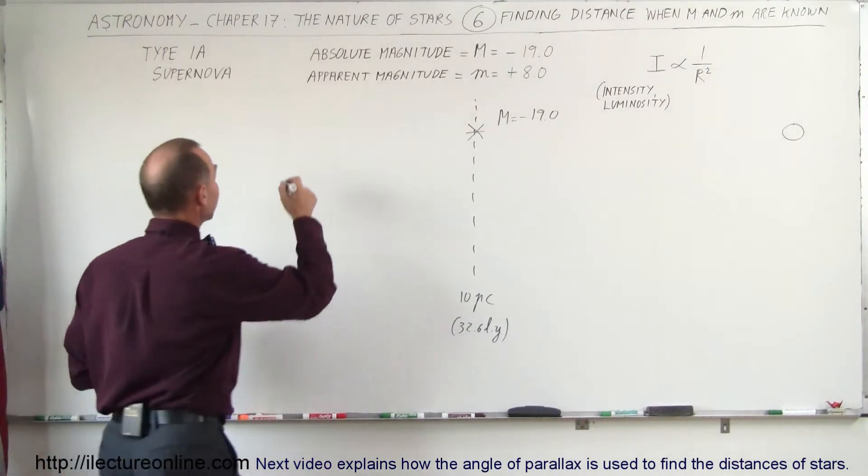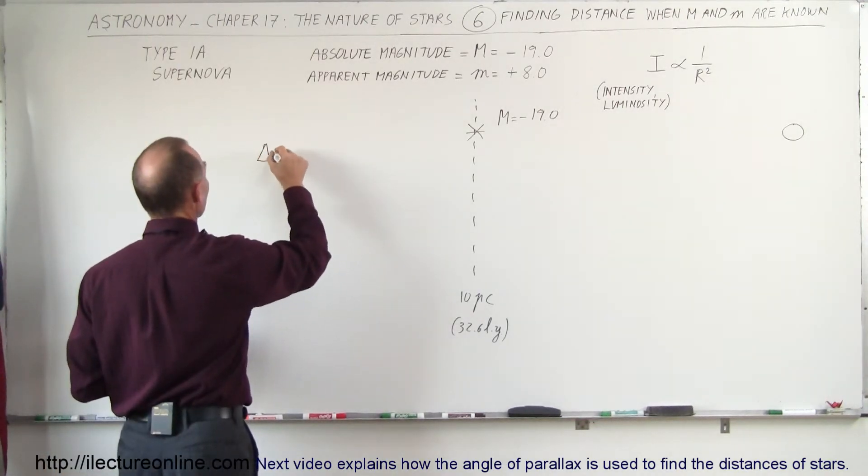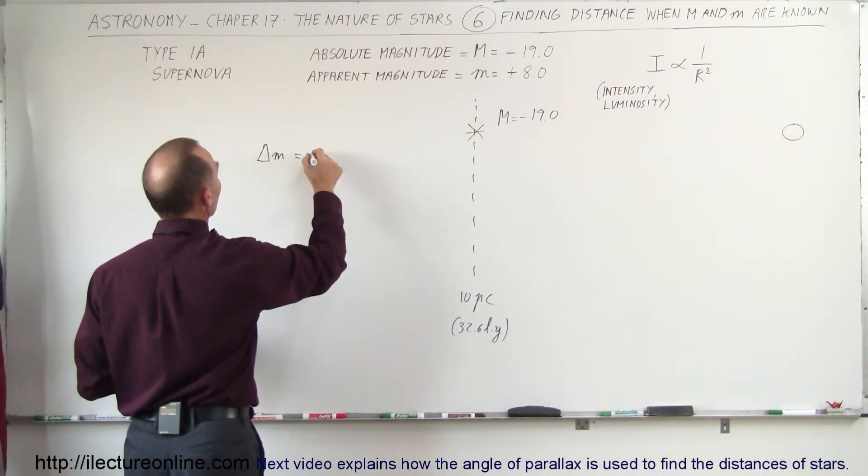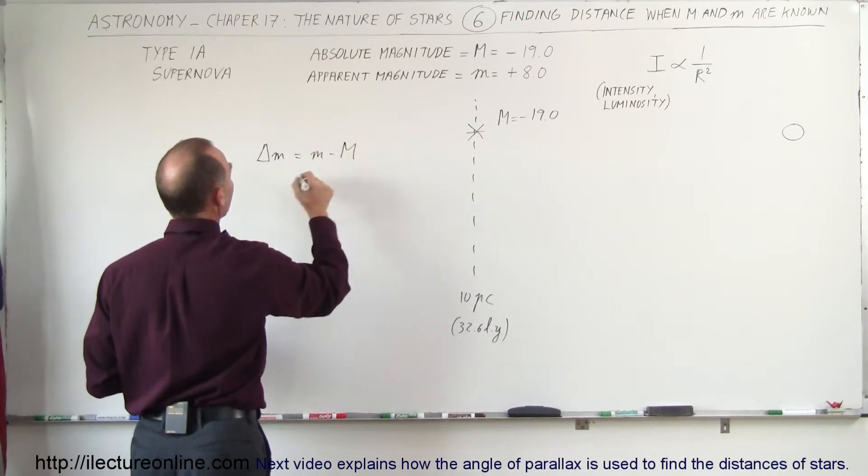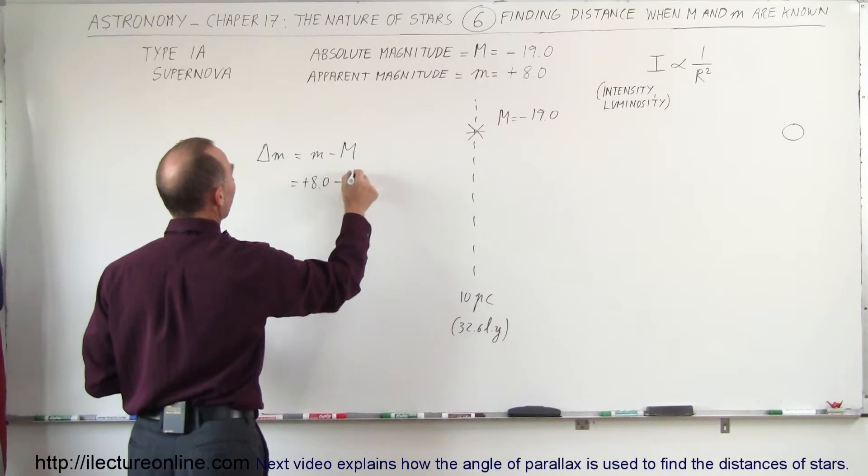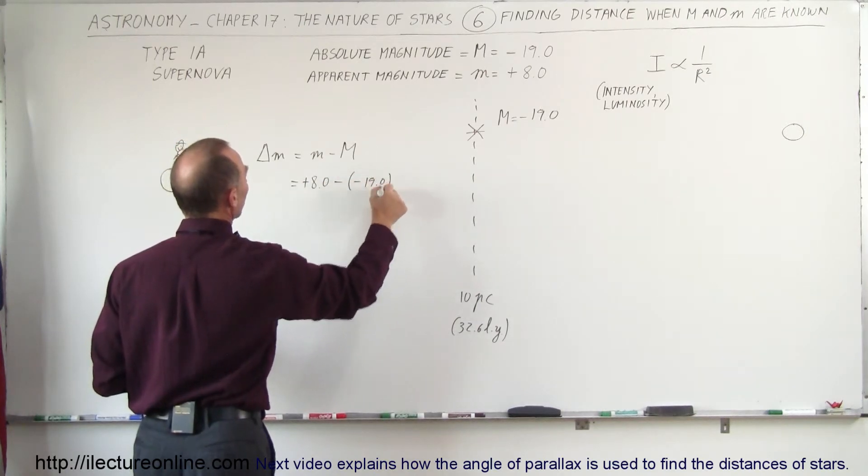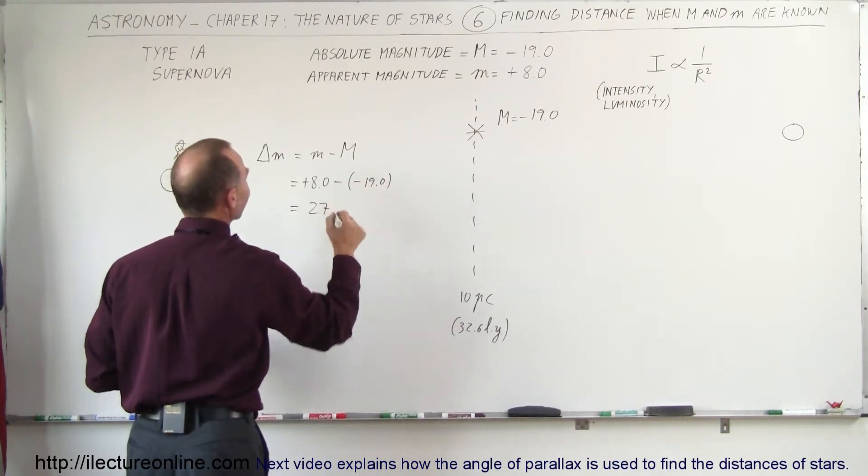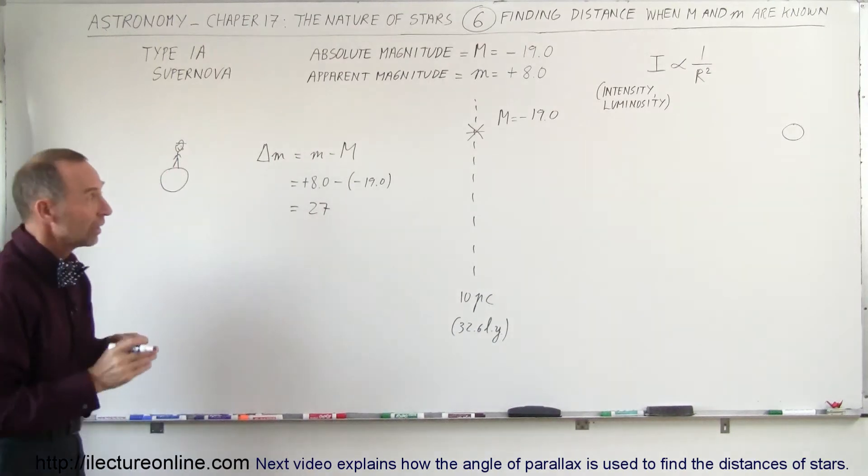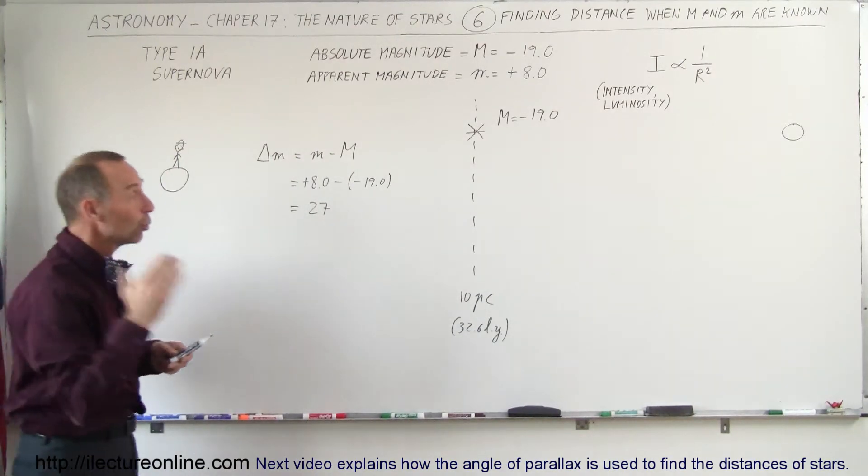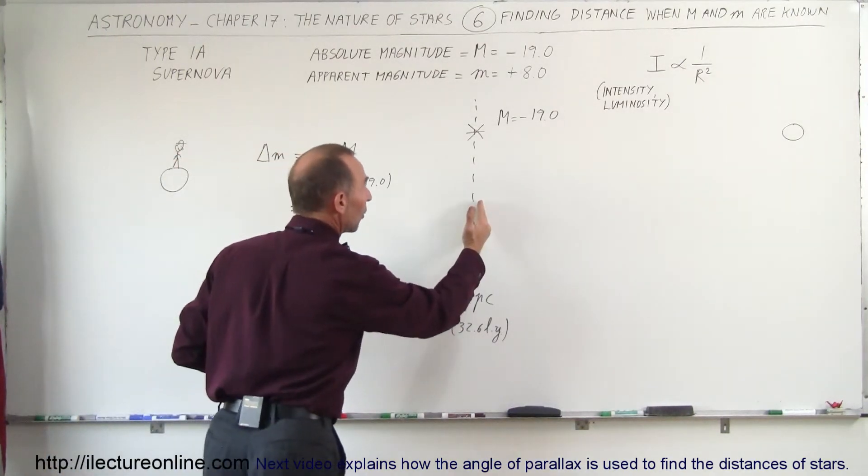The way we start is by taking the difference between the magnitudes, so this is equal to m minus M. So we start at 8.0, that's plus minus and minus 19.0, so the difference is 27 magnitudes between the way it appears and the way it would appear if it was only 10 parsecs away.